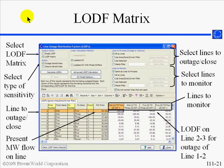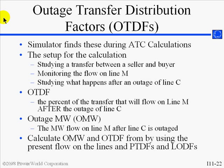This slide summarizes the LODF dialog with the LODF matrix option. Next, we'll discuss the outage transfer distribution factor, or OTDF. The OTDF is really just a combination of the PTDF and the LODF. There's no dialog in Simulator simply for calculating the OTDFs, but rather Simulator does this internally and reports the results during the ATC calculations. The ATC is our add-on tool for calculating the available transfer capability, which tells you the capacity of the transmission network to support a transfer between a buyer and a seller.